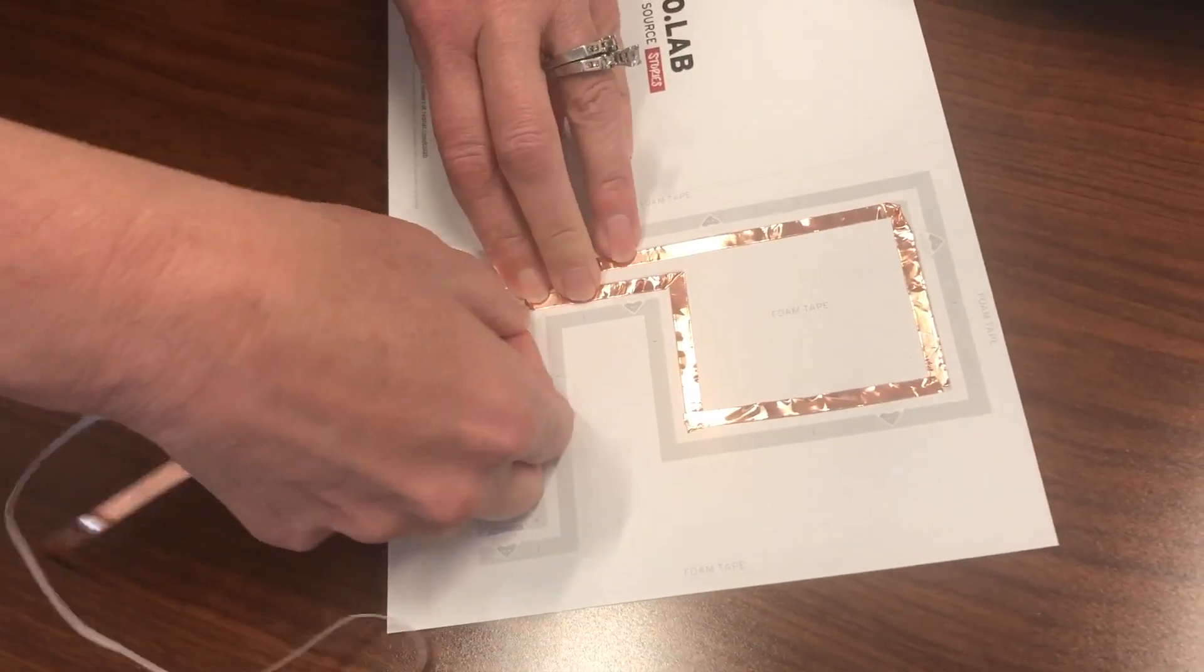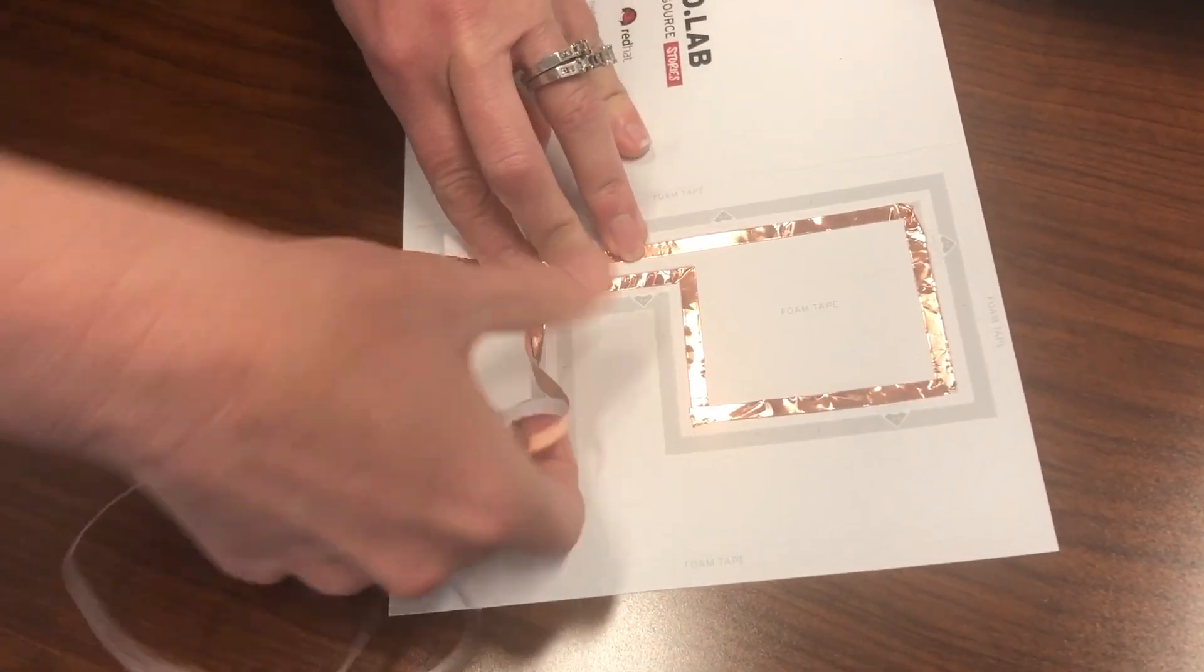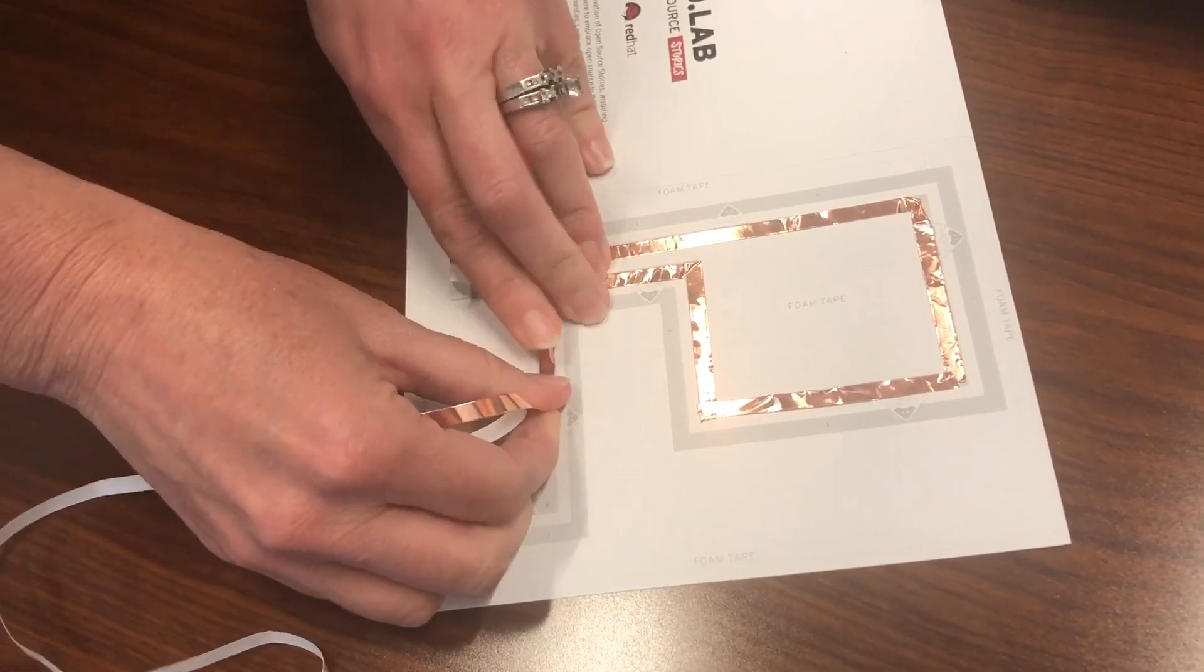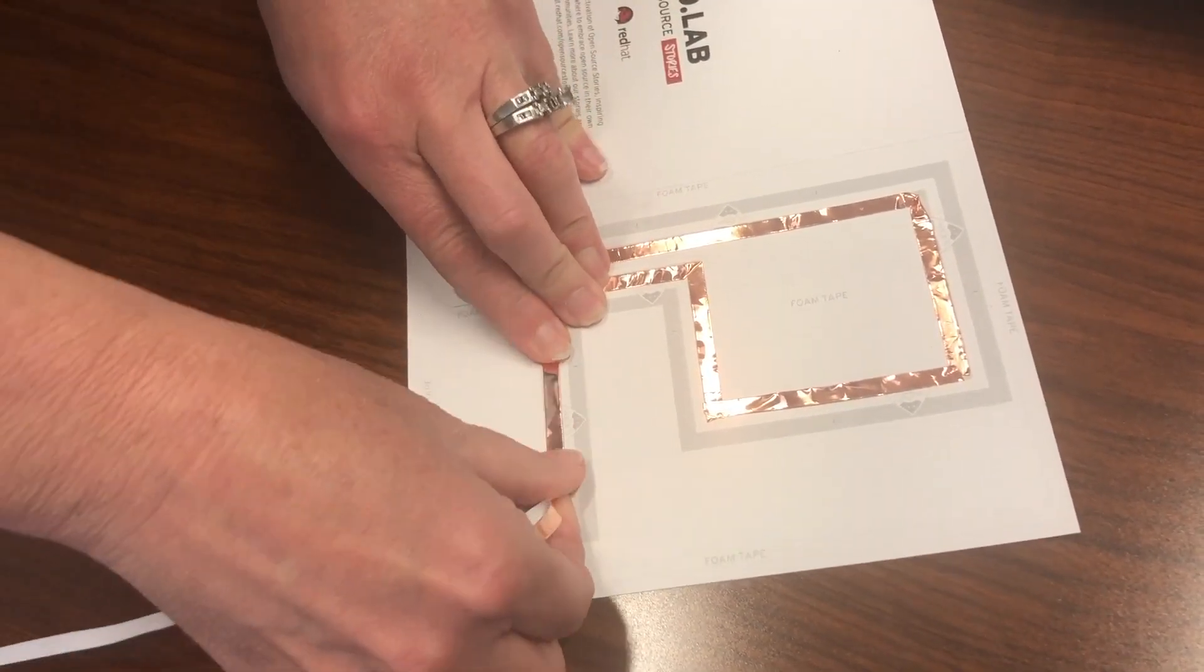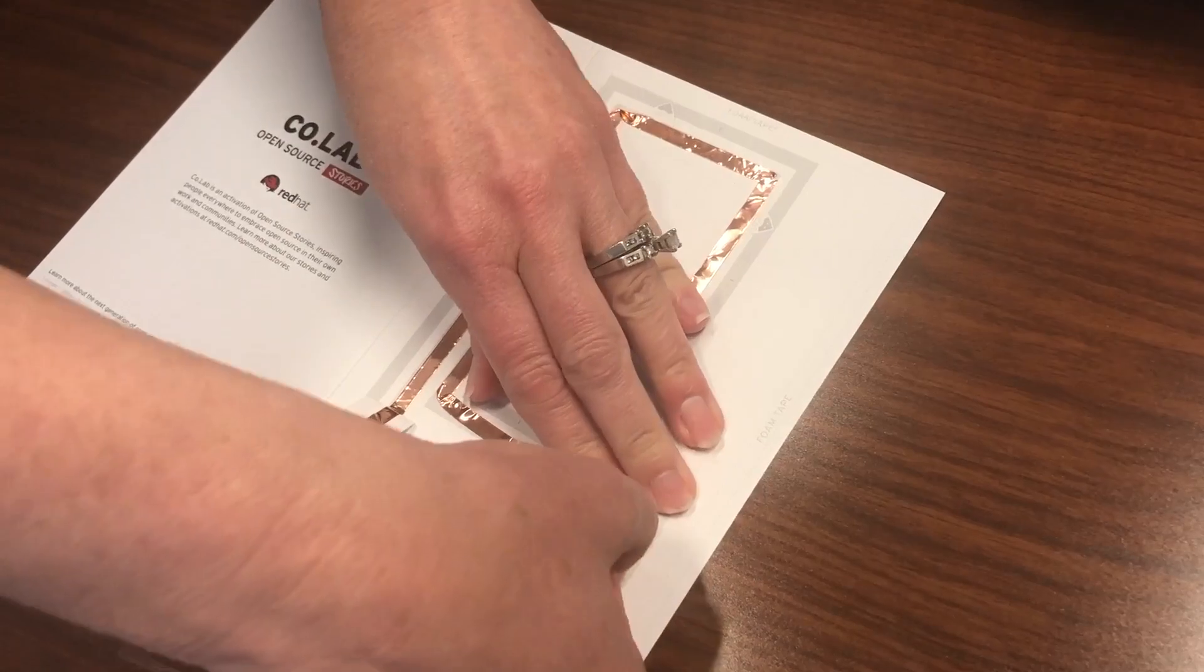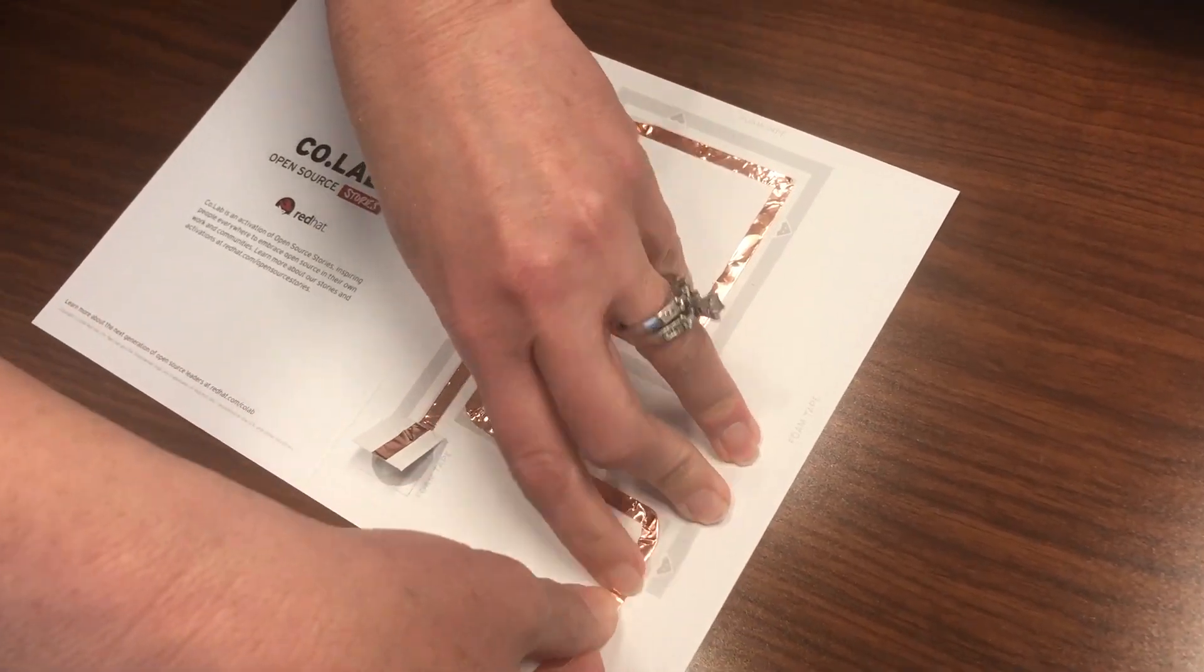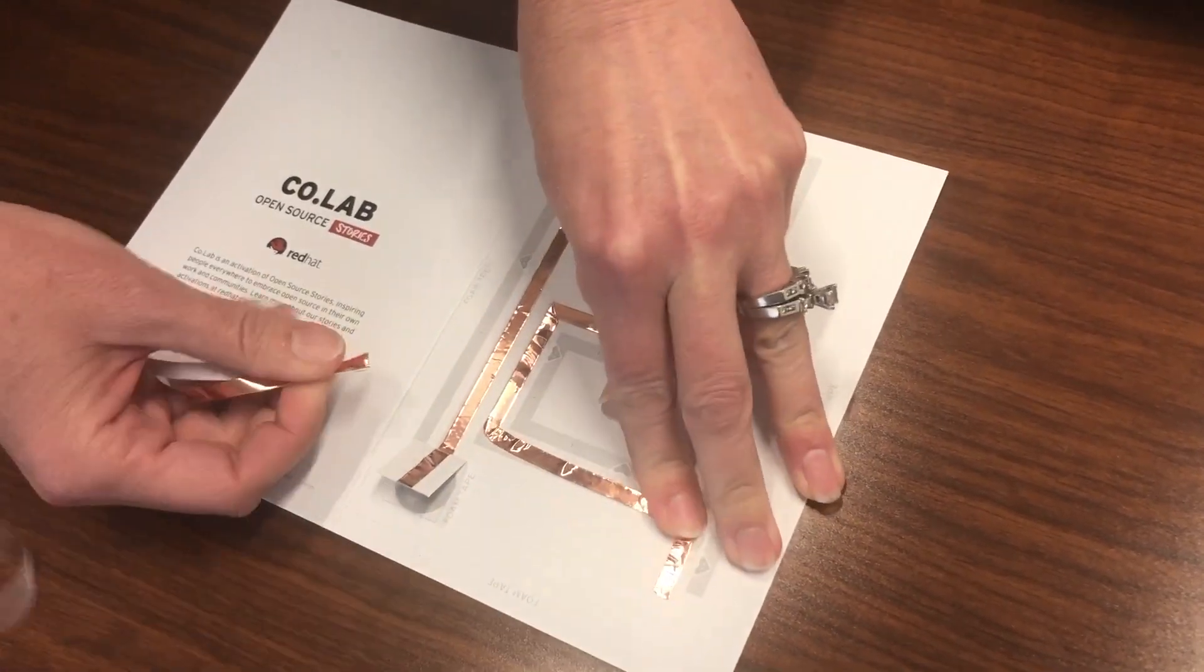We're almost at the end of our positive line, and you should have just a little bit of copper tape left over at the end, and that's okay. You can either cut it, or it will probably just tear off like that.